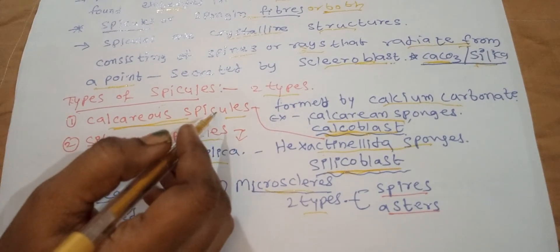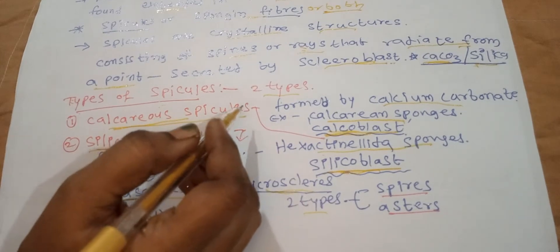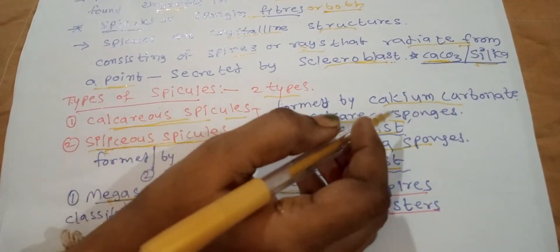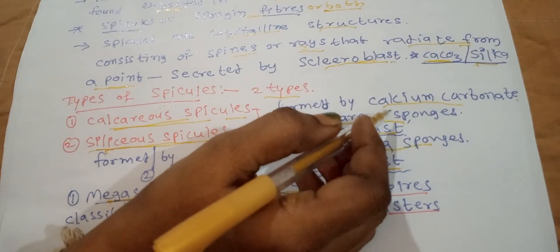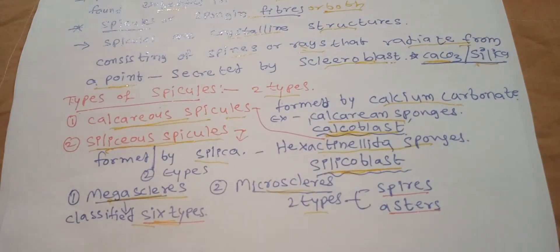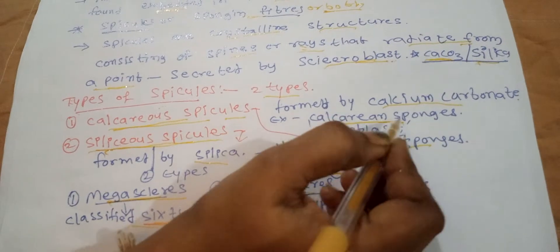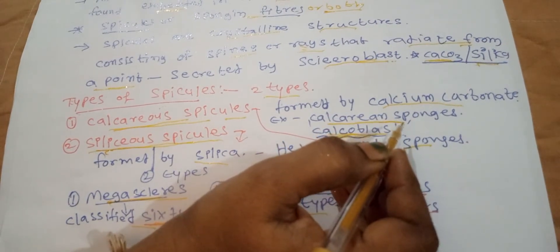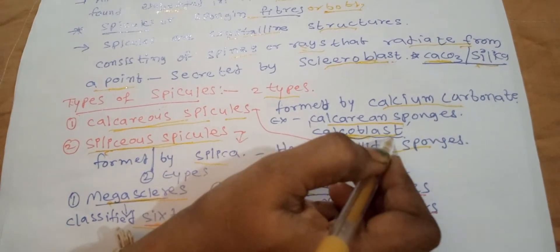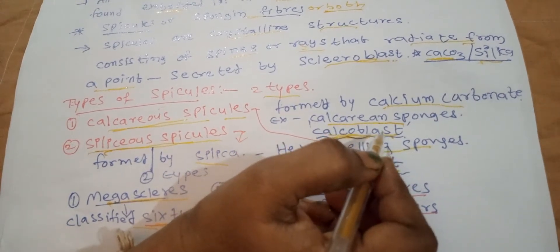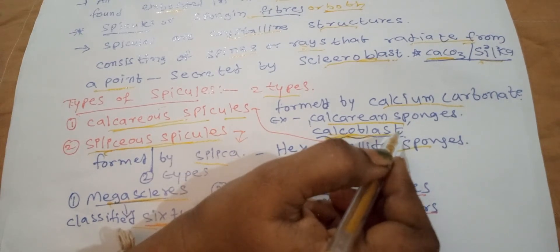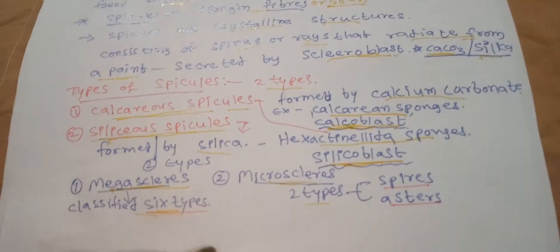Calcareous spicules are formed by calcium carbonate. They are present in the class Calcarea. The scleroblast secreting calcareous spicules is called a calcoblast — very important.